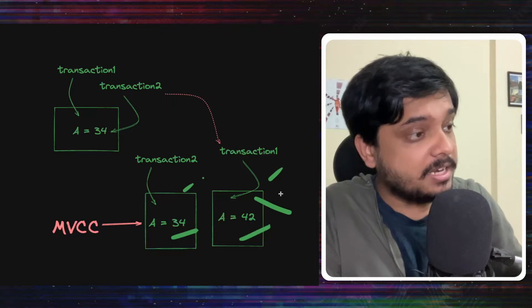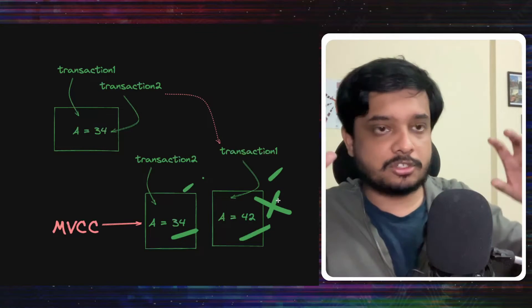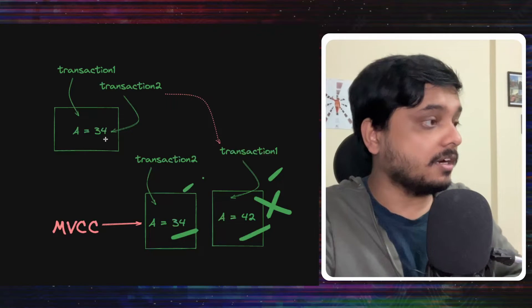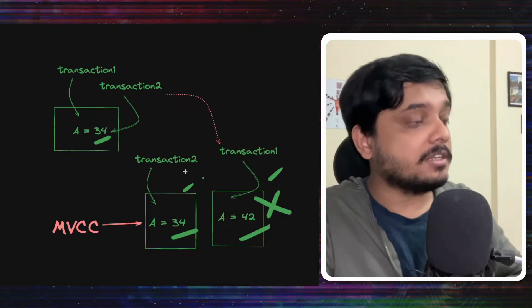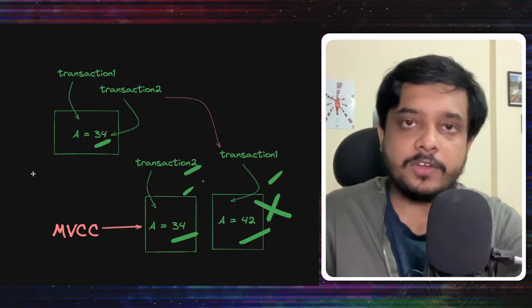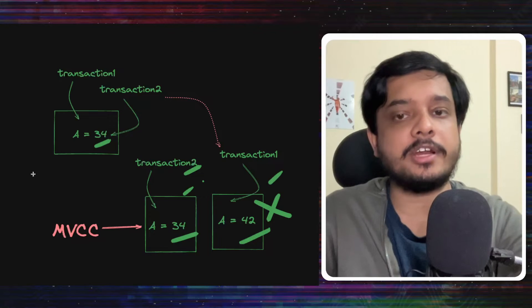This newly created copy is just thrown away, so this data does not exist anymore. In my database, the data is still 34. Transaction 2 gets the data as 34. So this solves our problem.